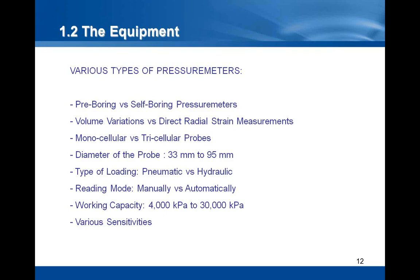Some probes are fitted with two expandable membranes. These are the Ménard pressure meters and are referred to as tricellular probes. These pressure meters use two circuits, one for a gas and one for a water circuit. This is for preventing the end effects or bias due to variations of the shape of the membrane during the test. The other type of probe is equipped with a single membrane and is referred to as a monocellular probe.